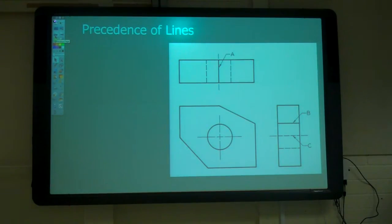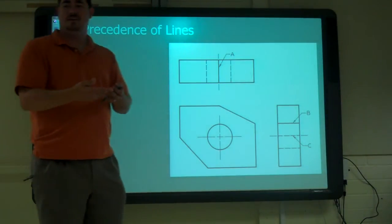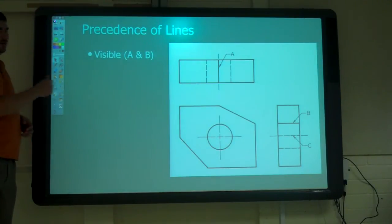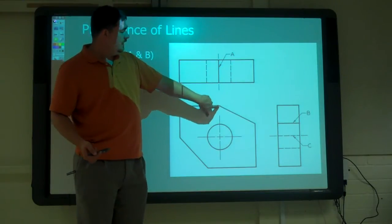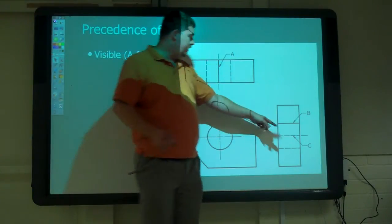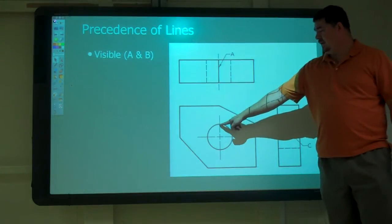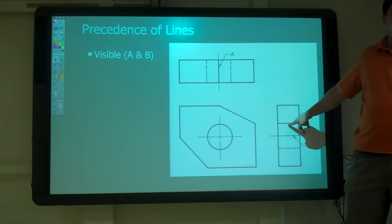So which of those lines do you think is more important? The precedence. Which is more important? An object line, hidden line, or center line? Which is the most important? The object line. You really don't care about what you can't see, right? That's the most important thing. So our visible lines or object lines, that's the most important. So like here on A, we have an object line and a center line lined up. So we show the object line. Over here, we have a visible line and a hidden line lined up. We show the visible line.